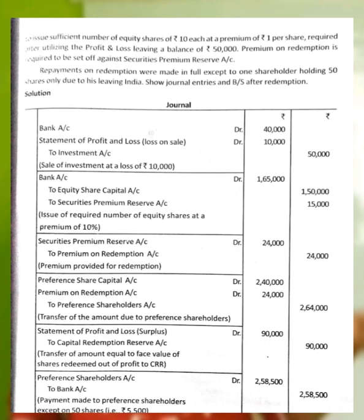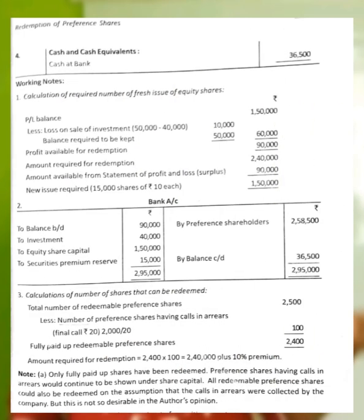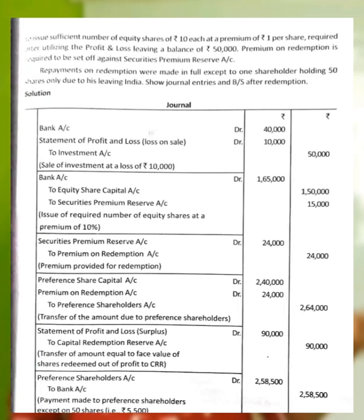Journal Entry 2 — Fresh issue of equity shares: Bank Account Dr Rs.1,65,000; To Equity Share Capital Rs.1,50,000; To Securities Premium Reserve Rs.15,000. Journal Entry 3 — Premium on redemption: Securities Premium Reserve Account Dr Rs.24,000; To Premium on Redemption Account Rs.24,000.